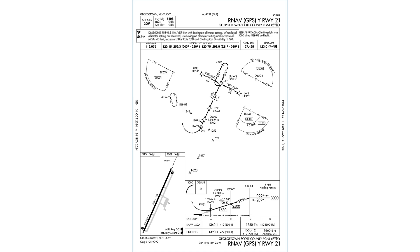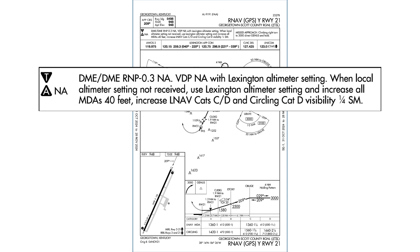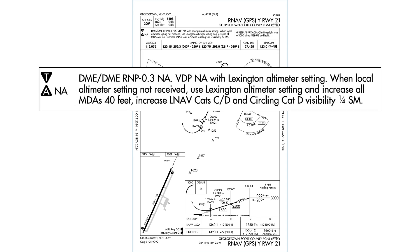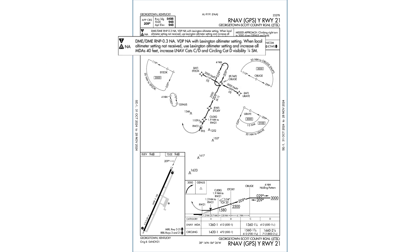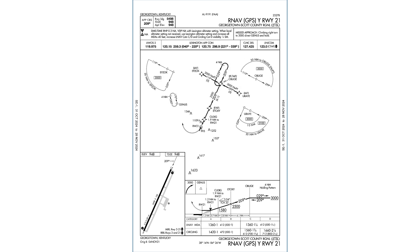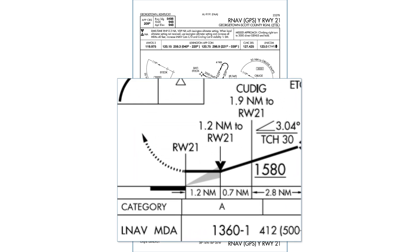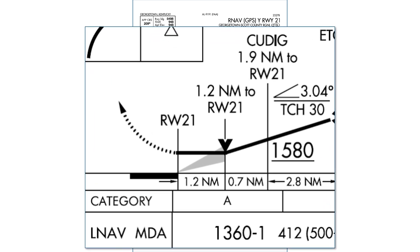That's not an issue on this approach under normal circumstances, but in the notes section, it says the MDA will be raised when an off-field altimeter setting needs to be used. And of course on many approaches, different category aircraft will have different MDAs. So we're basing it off the MDA of 1360, even though we may not be at that altitude when we find the runway.